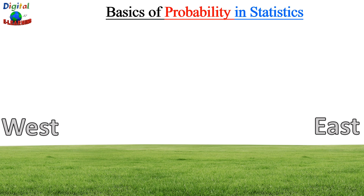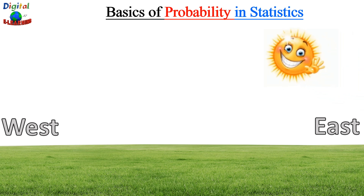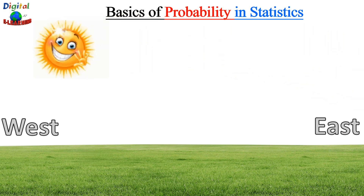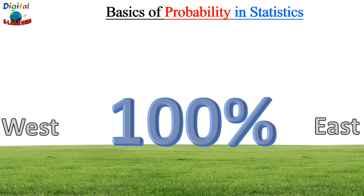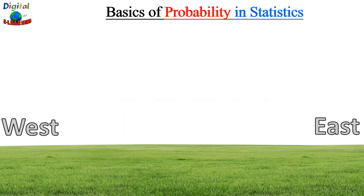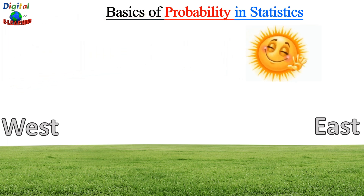Now let's explore a classical example of probability in our everyday life — the rising and the setting of the sun. We all know the sun rises from the east and sets in the west, but have you ever wondered the probability of this happening? The rising of the sun in the east is a natural phenomenon that we experience daily. It is a hundred percent universal fact.